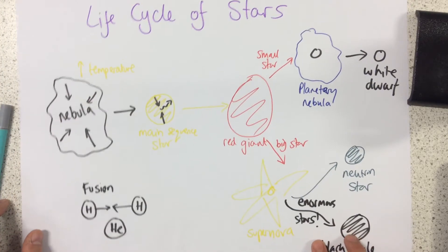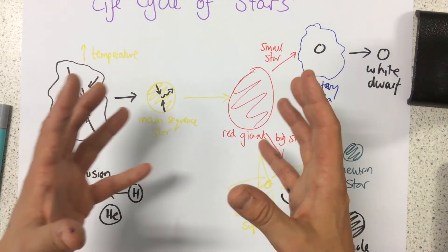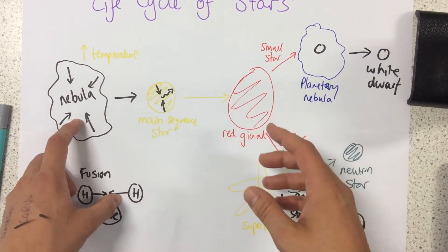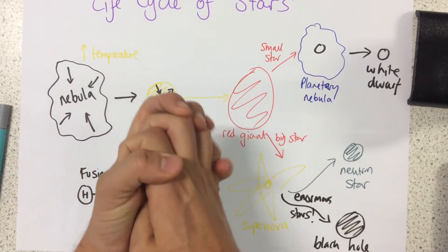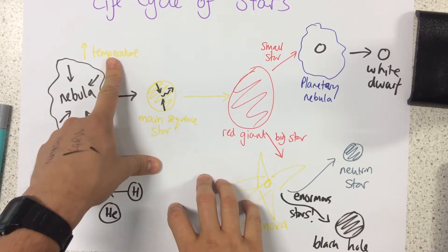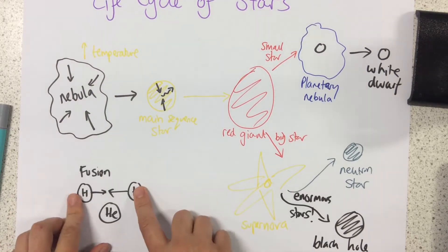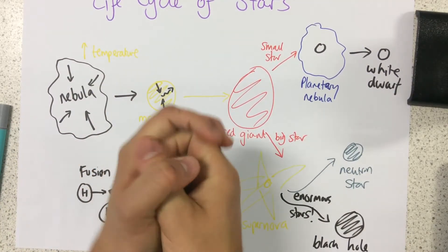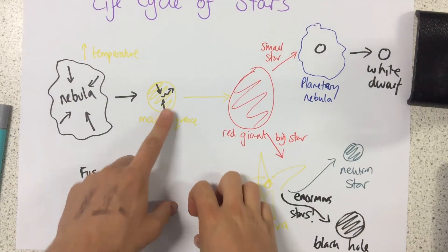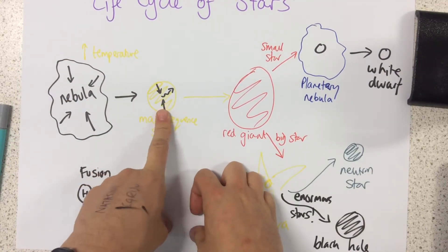So just to quickly recap: a nebula is a cloud of dust and gas. Gravity causes it to all come together. As it does, it causes an increase in temperature. This temperature is high enough to fuse together hydrogen nuclei. This fusion reaction releases loads of energy. That's how we get a main sequence star.